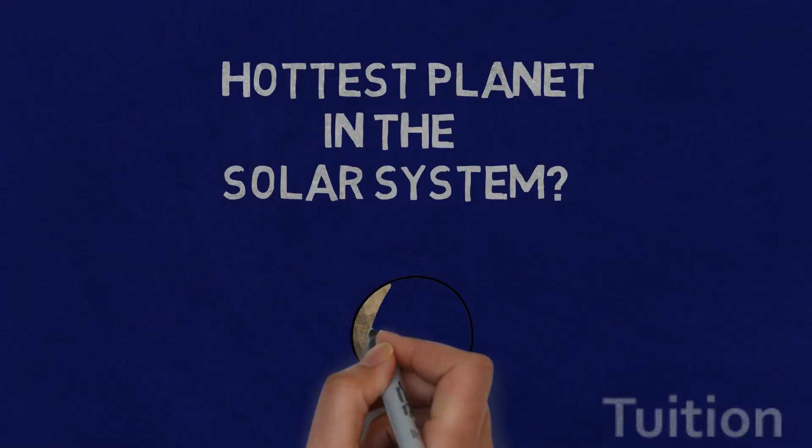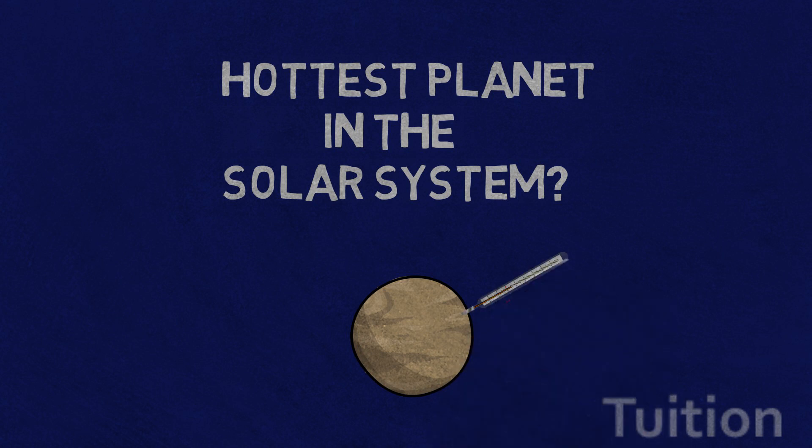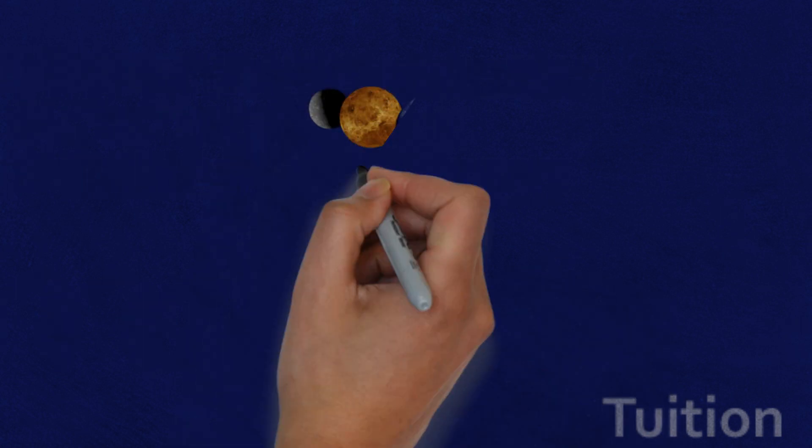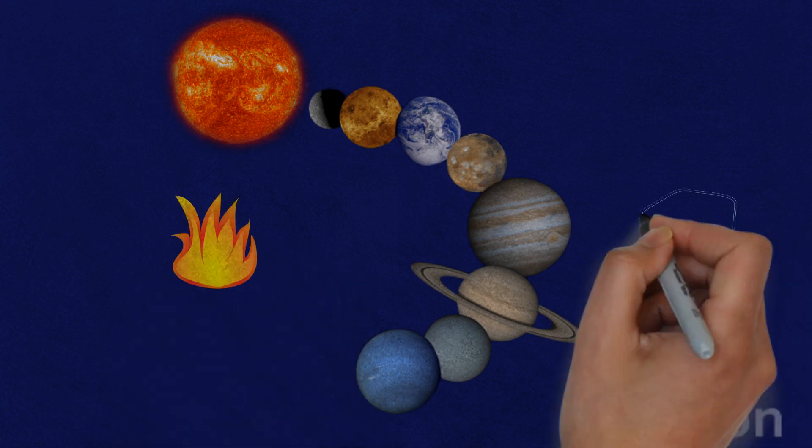Welcome to Little Einstein. In this video, we will learn about the hottest planet in our solar system. In our solar system, there are planets both hotter and colder than Earth.